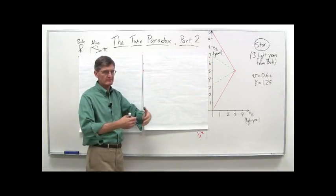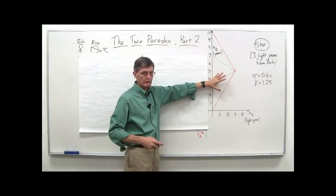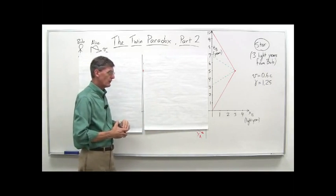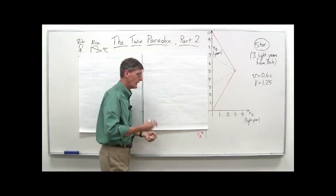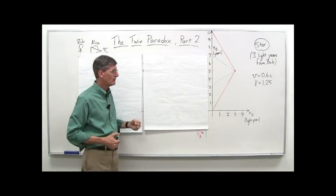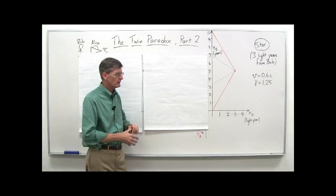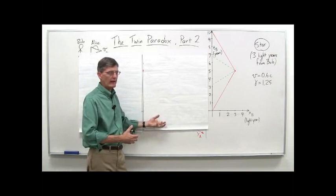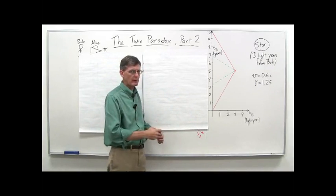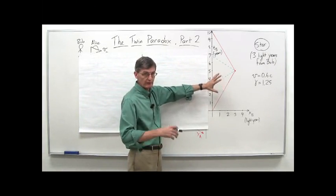Bob can understand the time dilation effect going on, and therefore since Alice is traveling with respect to Bob, he sees her clock running slow on the way out and also running slow on the way back. We can analyze the twin paradox without having to do anything with acceleration or the general theory of relativity. We can understand it just from the concepts of special relativity. So Bob sees Alice go out and back again and understands that with time dilation her clocks are running slower, so she should be younger. But Alice sees the same thing for Bob. So the question is: why is Alice younger? That's the paradox. How can she understand that she's younger when it seems like maybe Bob should be younger? That's what we want to do in this part two of the twin paradox.